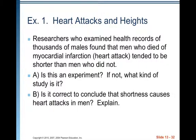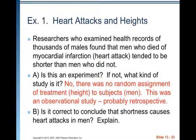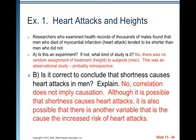Example 1 — heart attacks and heights: researchers who examined health records of thousands of males found that men who died of myocardial infarction tend to be shorter than men who did not. Is this an experiment? No — there was no random assignment of treatment height to the subjects. This was an observational study, probably retrospective. Is it correct to conclude that shortness causes heart attacks in men? No — correlation does not imply causation. Although shortness could cause heart attacks, it is also possible that another variable is the cause of the increased risk.